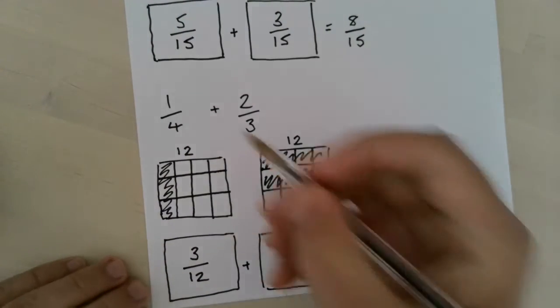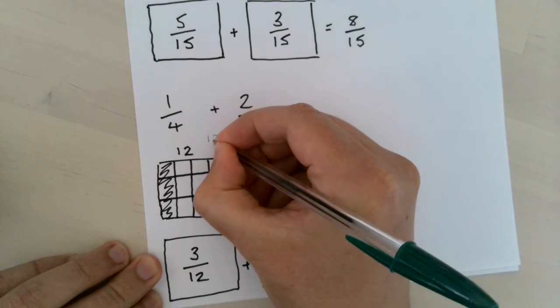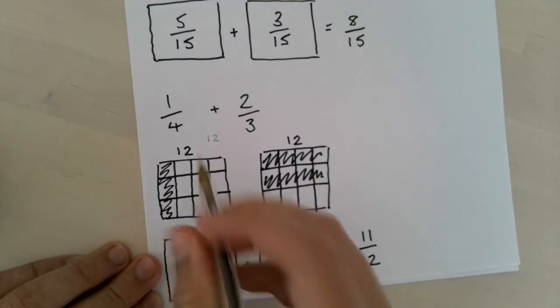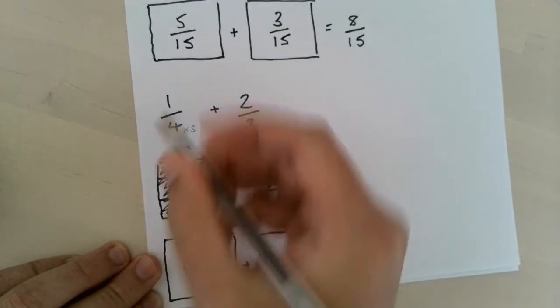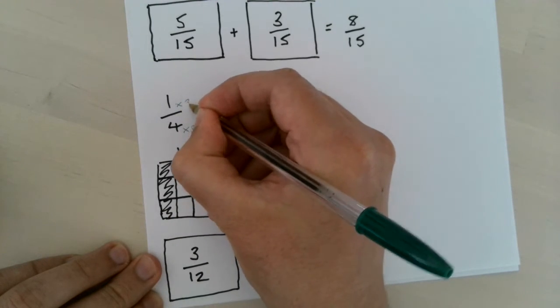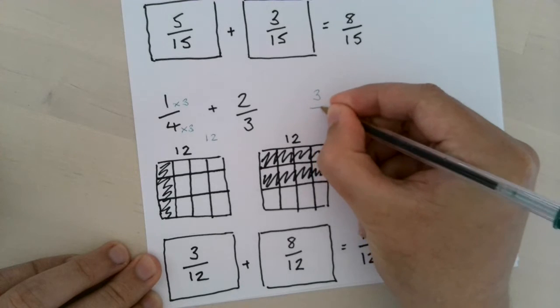Just to show, going through this without the models: 4 times 3 which is 12, so we're going to make the denominators 12. What do we do to 4 to get 12? Multiply it by 3. What we do to the denominator we must do to the numerator, which leaves us with 3 over 12.